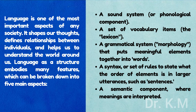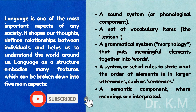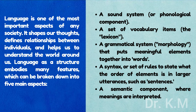Language is one of the most important aspects of any society. It shapes our thoughts, defines relationships between individuals, and helps us to understand the world around us. Language as a structure embodies many features, which can be broken down into five main aspects: 1. A sound system, or phonological component. 2. A set of vocabulary items, the lexicon. 3. A grammatical system — morphology — that puts meaningful elements together into words. 4. A syntax, or set of rules to state what the order of elements is in larger utterances such as sentences. 5. A semantic component, where meanings are interpreted.